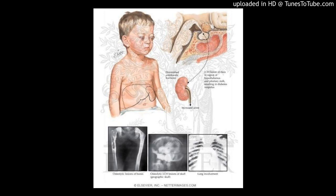Langerhans cell histiocytosis, LCH. The histiocytic diseases in children and adults are caused by an abnormal accumulation of cells of the mononuclear phagocytic system. Only Langerhans cell histiocytosis, LCH, a myeloid-derived dendritic cell disorder, is discussed in detail in this summary. The histiocytic diseases have been reclassified into five categories, and LCH is in the L group.